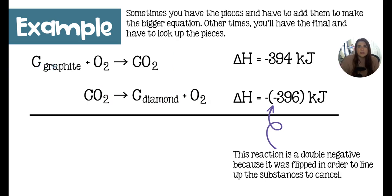Graphite, which is the carbon that's in a pencil, reacts with oxygen and forms carbon dioxide. Carbon dioxide then reacts and will form carbon in the form of a diamond with an oxygen product. The ΔH for this reaction is negative 394 kilojoules. And the ΔH for this reaction is a negative negative 396 kilojoules, which indicates that this reaction had been flipped.